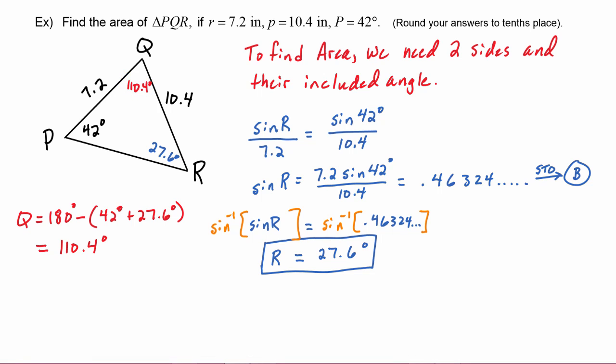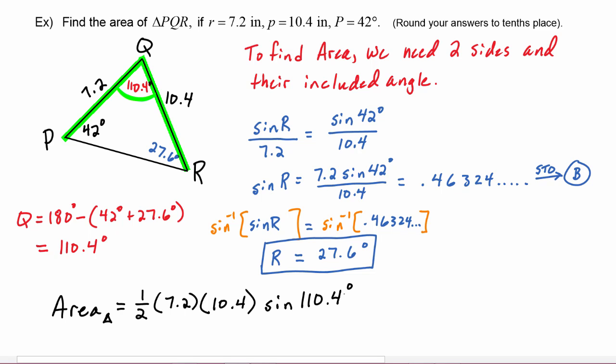Now we finally have the situation where we have two sides of the triangle and their included angle. So now we know that the area of the triangle is going to be one half of the product of the two sides, so 7.2 times 10.4 times the sine of the included angle which is 110.4 degrees.